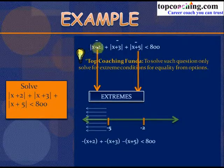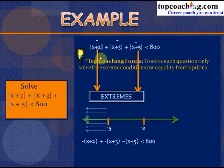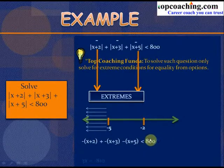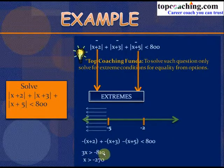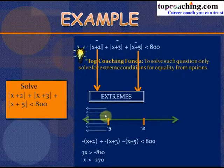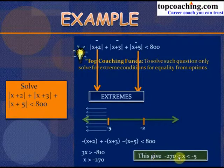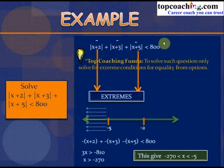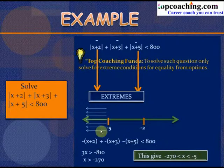This gives 3x > −810, or x > −270. So when x < −5, we get x > −270, meaning the inequality is satisfied in the range −270 < x < −5.